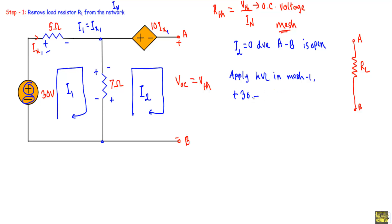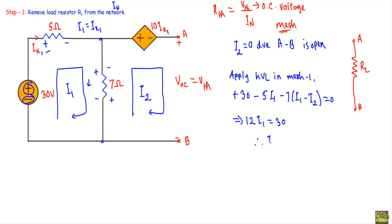Applying KVL in mesh 1: +30 − 5·I1 − 7·(I1 − I2) = 0. Since I2 = 0, this simplifies to 12·I1 = 30, therefore I1 = 2.5 amperes.